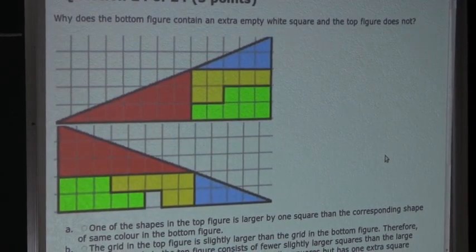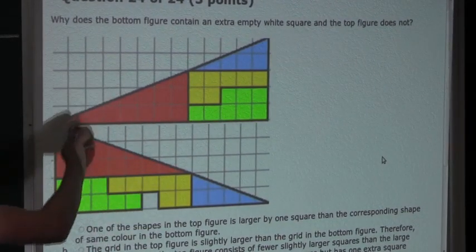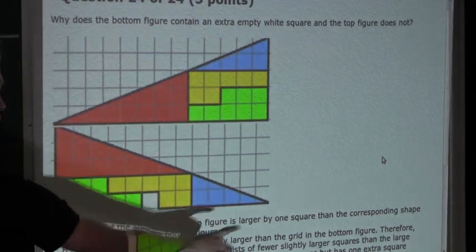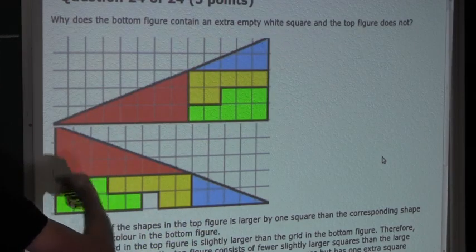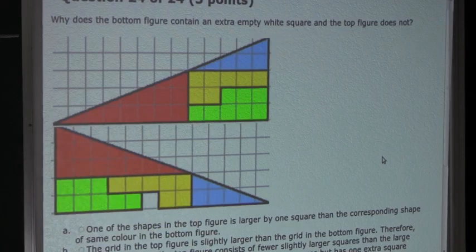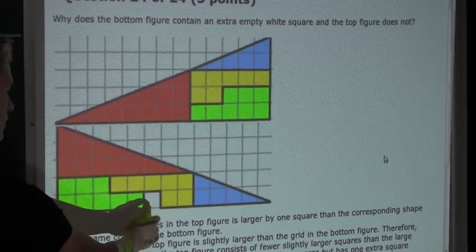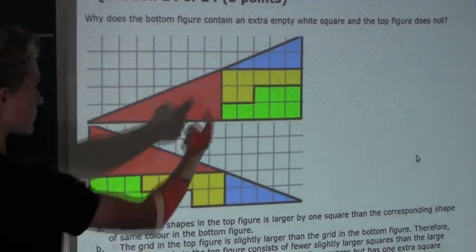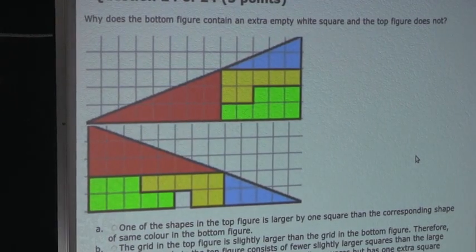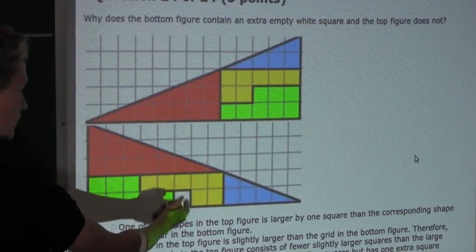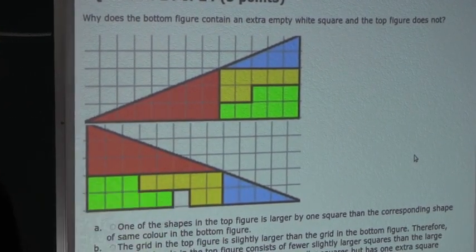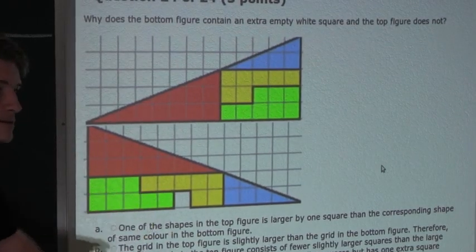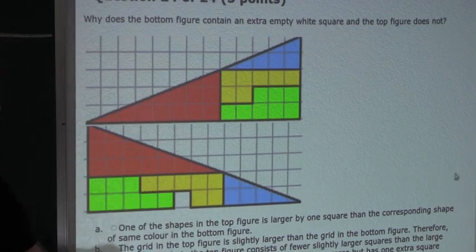Just looking at the diagram at first glance, you can see that they look like the same shape — they look like triangles — but what is striking is that in the bottom figure there is an empty white square, and in the top figure there is not. So this is a mystery of why there is a white square. Let's look at the possible options and see which one explains this mystery.